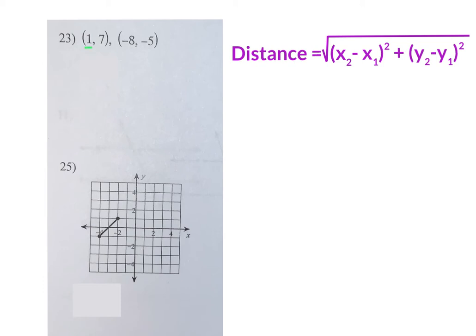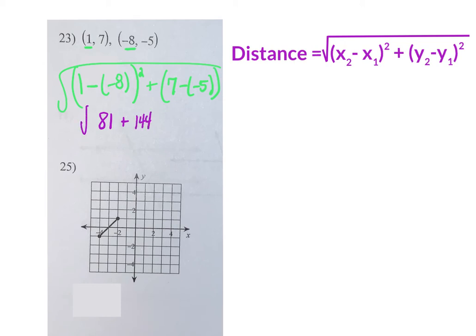You're literally going to do what it says: subtract your X's — so one minus negative eight. Pay attention to those negatives, because subtracting a negative changes your answer. Add to that your Y's: seven minus negative five. Order of operations: one minus negative eight gives nine, nine squared is 81. Seven minus negative five is 12, 12 squared is 144. Add those together to get 225, which has a perfect square root of 15. Your answer is 15.